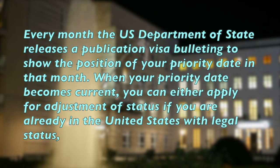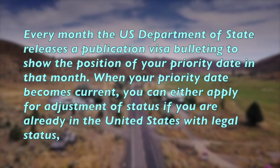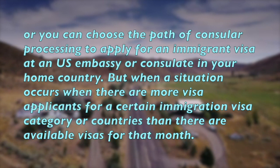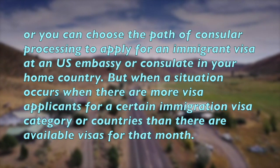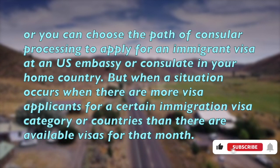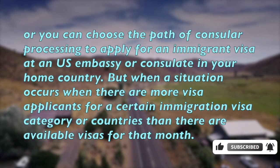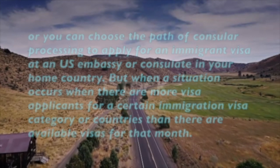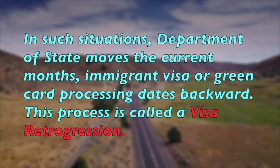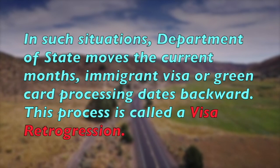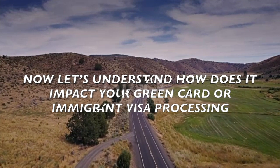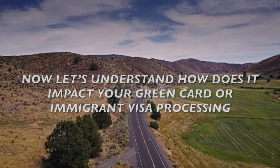When your priority date becomes current, you can either apply for adjustment of status if you are already in the United States with legal status, or you can choose the path of consular processing to apply for an immigrant visa at a U.S. embassy or consulate in your home country. But when there are more visa applicants for a certain immigration visa category or country than there are available visas, the Department of State moves the current month's immigrant visa or green card processing dates backward. This process is called visa retrogression.